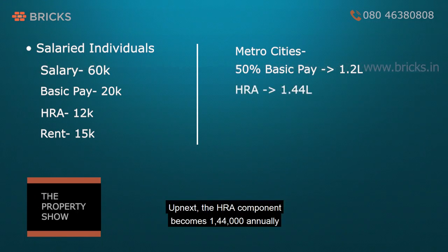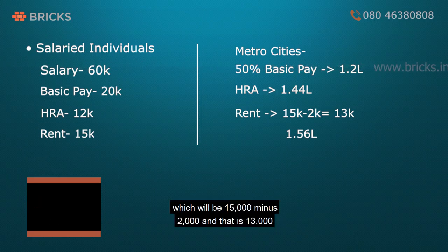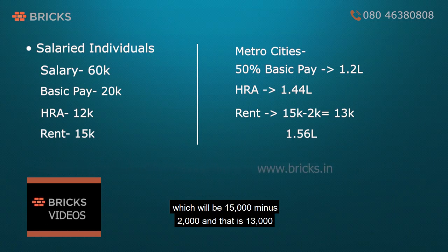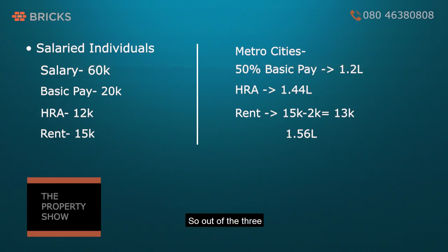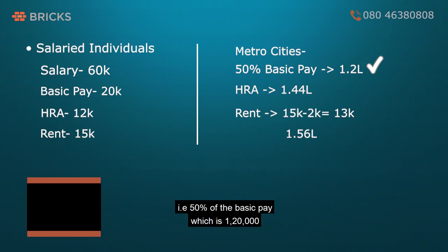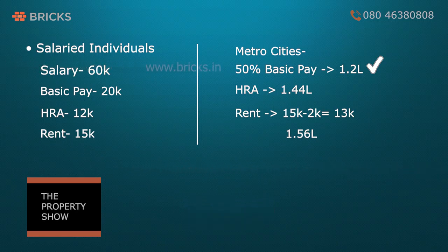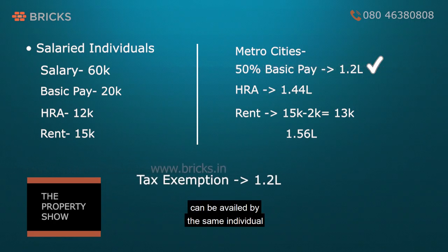The HRA component is ₹1,44,000 annually. The third calculation is rent (₹15,000) minus 10% of basic pay (₹2,000), which equals ₹13,000 per month, or ₹1,56,000 annually. Out of the three, the minimum amount is the first calculation — 50% of basic pay — which is ₹1,20,000. So a tax exemption of ₹1,20,000 can be availed by this individual.